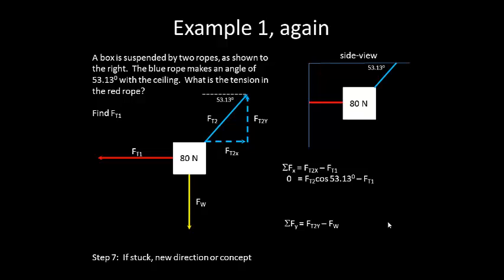The sum of the forces in the y direction is going to be my ups minus my downs, FT2y minus the weight. So again, I can put this in terms of my trig, FT2 sine of 53.13 degrees, minus the known weight. This now allows us to solve for the tension in string 2, which is 100 newtons.